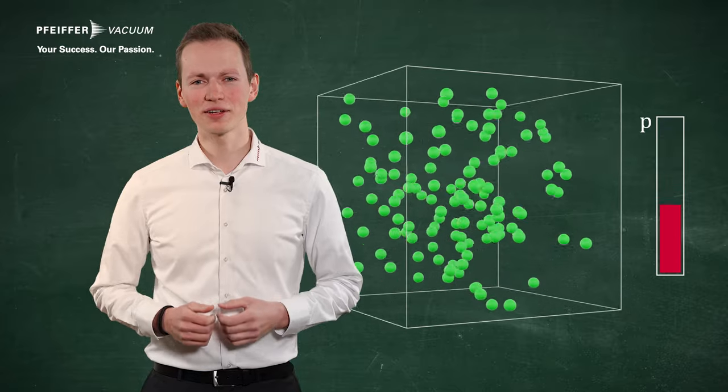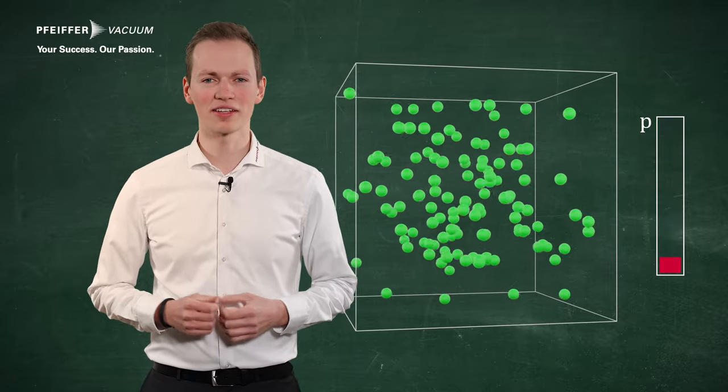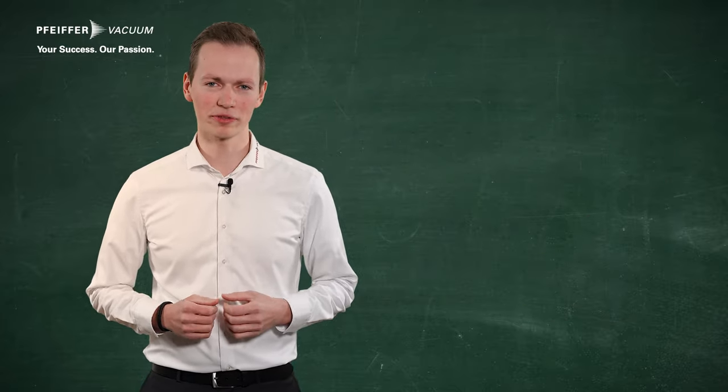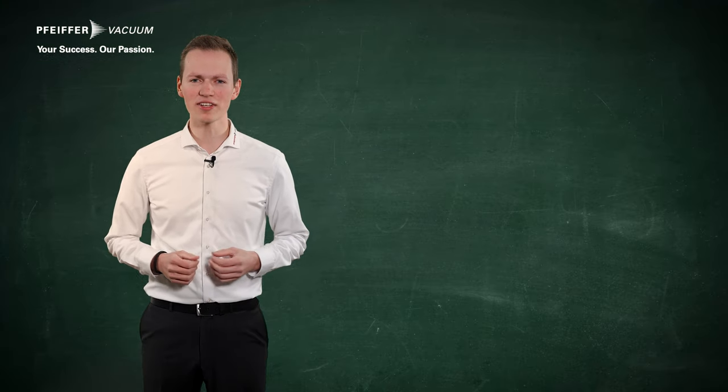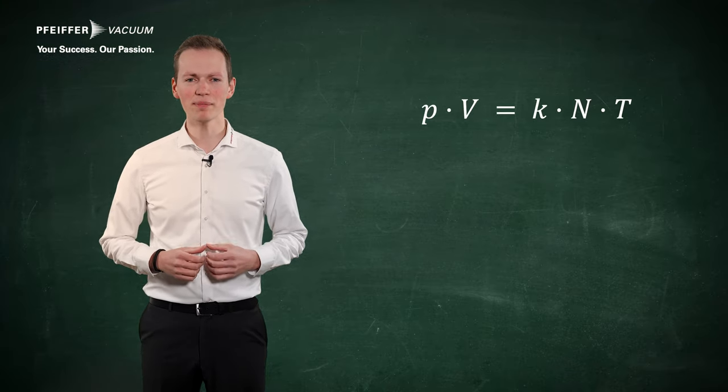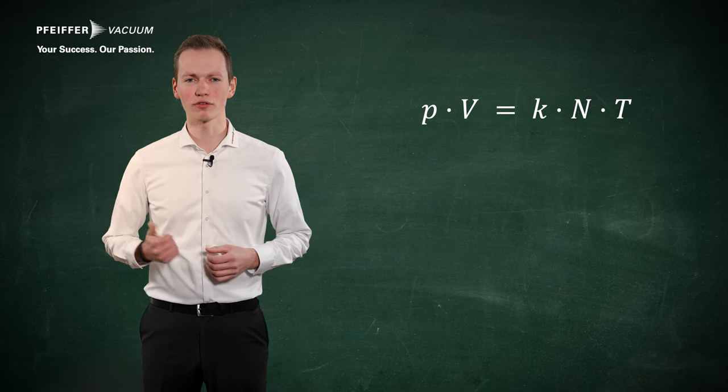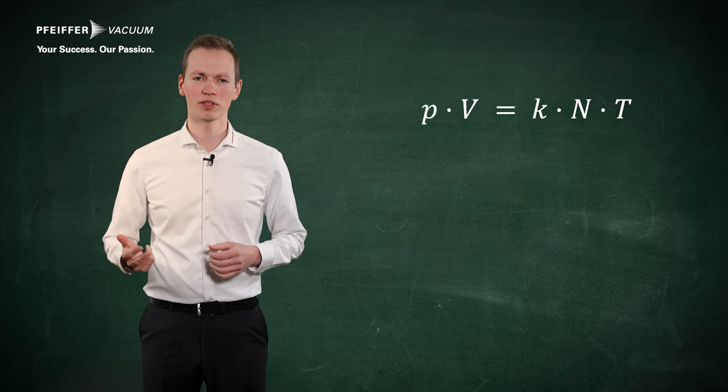Later in history, the physicist Gay-Lussac recognized that the temperature depends on the volume of a quantity of gas. As a result, the state of an ideal gas can be described as a function of pressure, temperature, and volume.